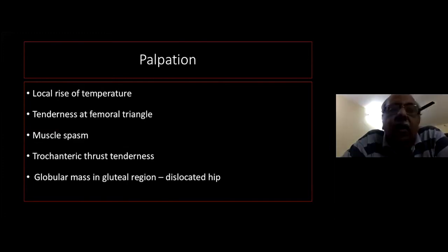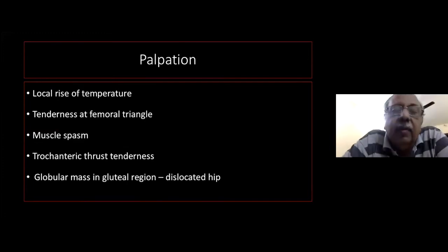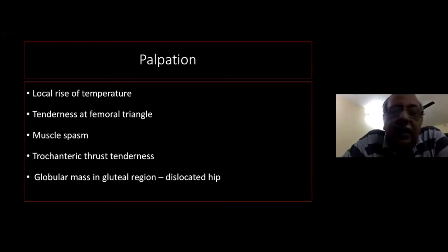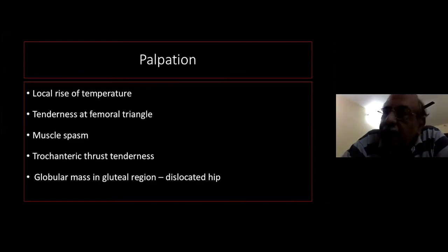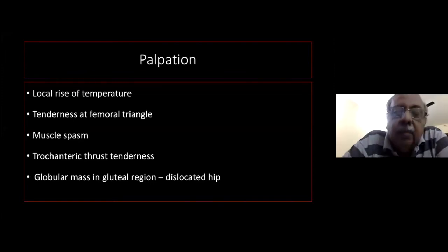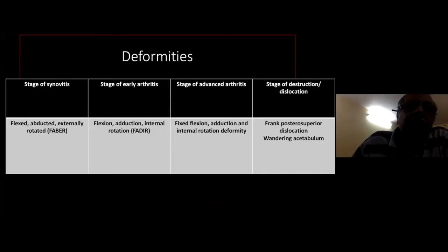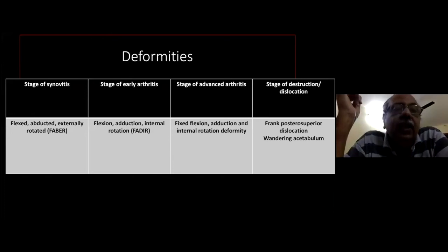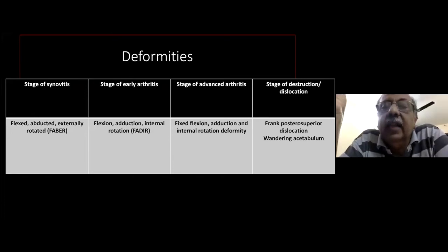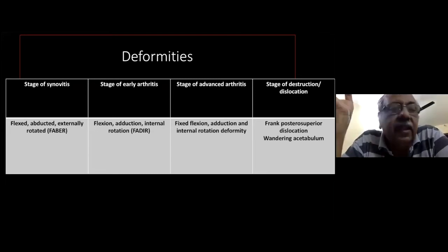On palpation, there will be a local rise of temperature. There is tenderness over the femoral triangle, and bitrochanteric tenderness may be elicited. Muscle spasm is present in the active stage. If the hip is dislocated or subluxated, a globular mass may be found in the gluteal region. Regarding deformities, Thule has classified the disease into four stages: stage of synovitis, stage of early arthritis, stage of advanced arthritis, and advanced arthritis with subluxation and dislocation.